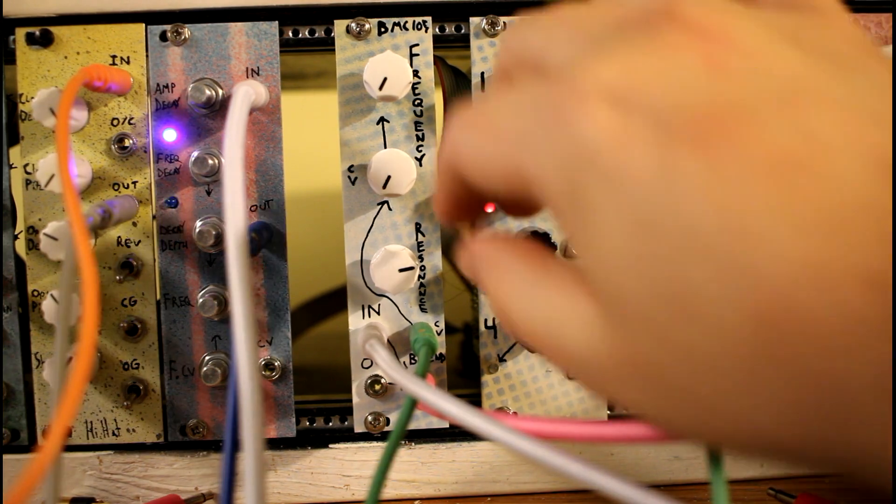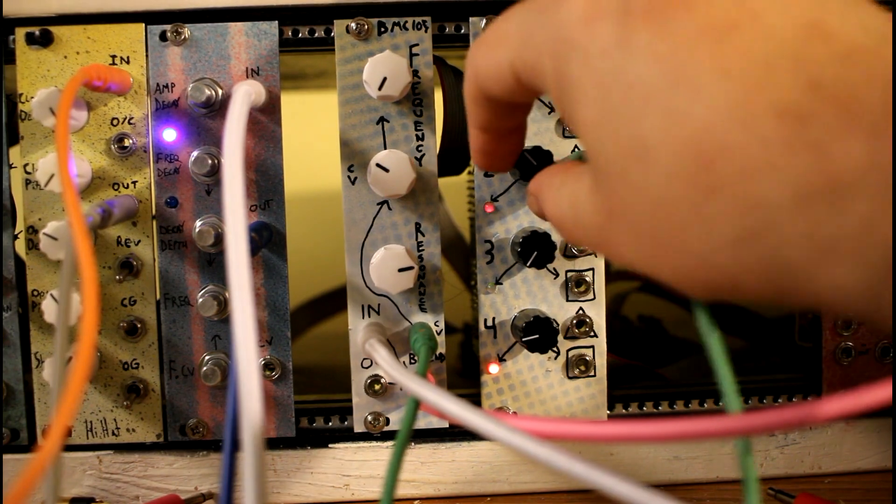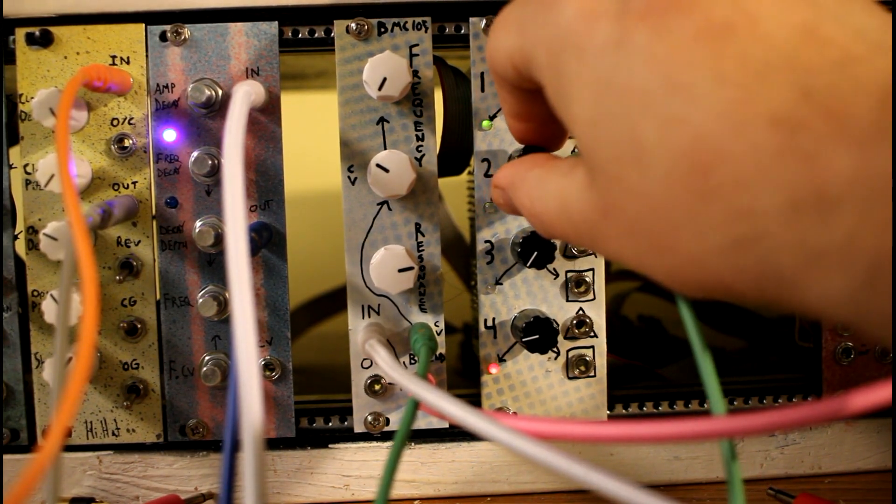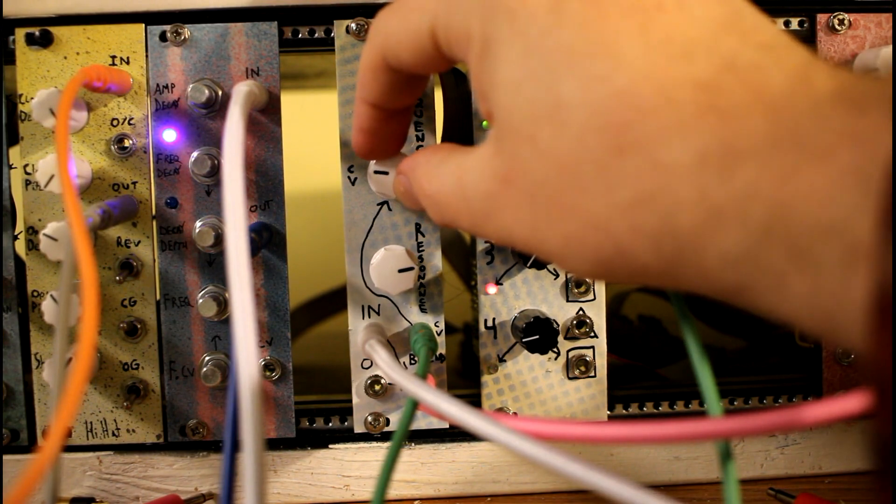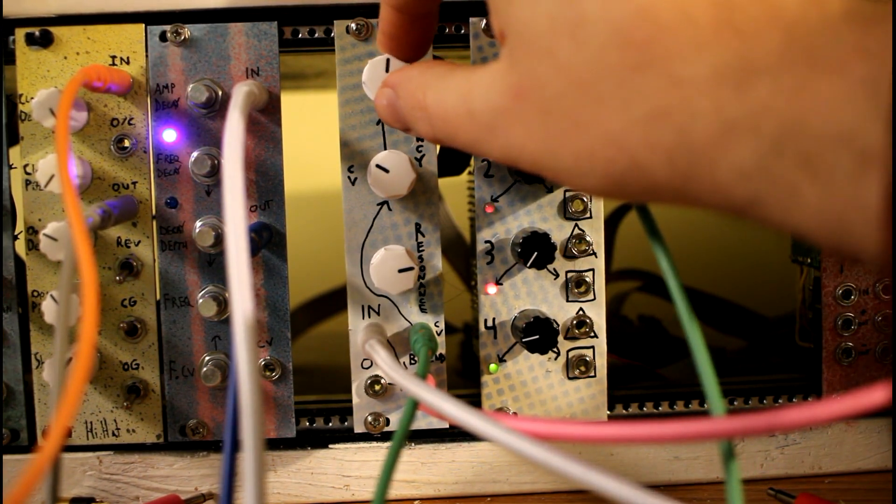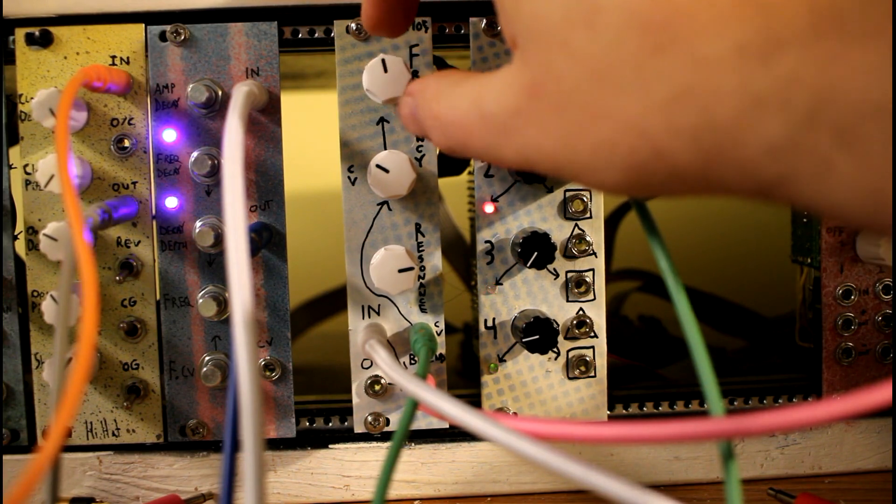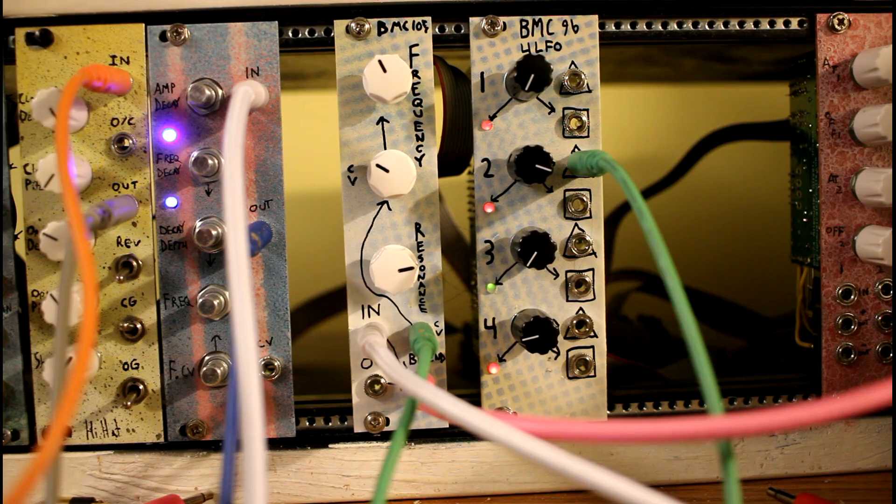And then this is our control voltage input that modulates the frequency. I'll set it to a fast. So you can kind of hear that on the tail end of that snare, kind of up and down.